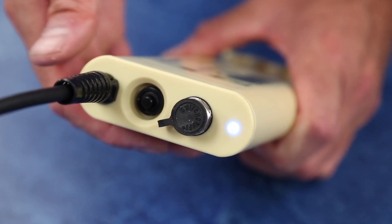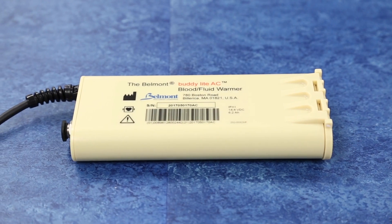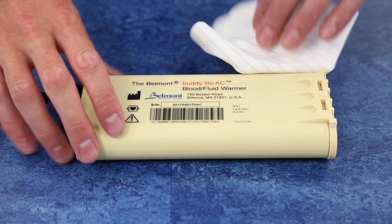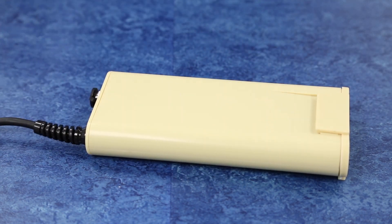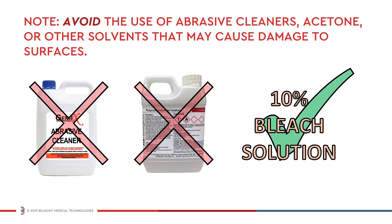To clean or disinfect the system, first power off the device. Using a soft cloth with water or with a 10% bleach solution, wipe down the outside surfaces of the battery housing, the power supply, and the heater unit. Note, avoid the use of abrasive cleaners, acetone, or other solvents that may cause damage to these surfaces.